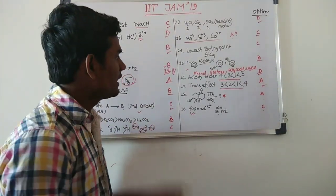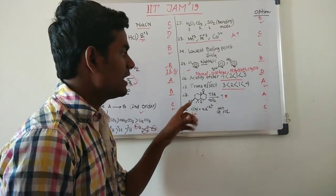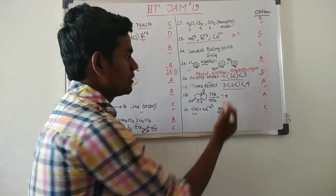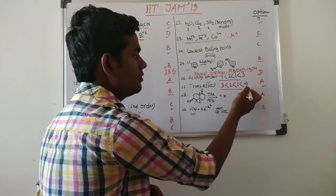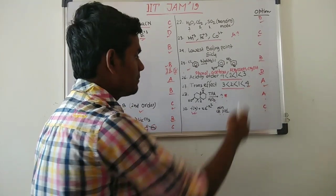They have asked a question about trans effect and they have given some platinum complex in which there is a chlorine. The question asked about substitution of this chlorine with pyridine, so the order will be in this way: 3, 2, 1, 4. The fourth one will go faster, so answer option will be A.